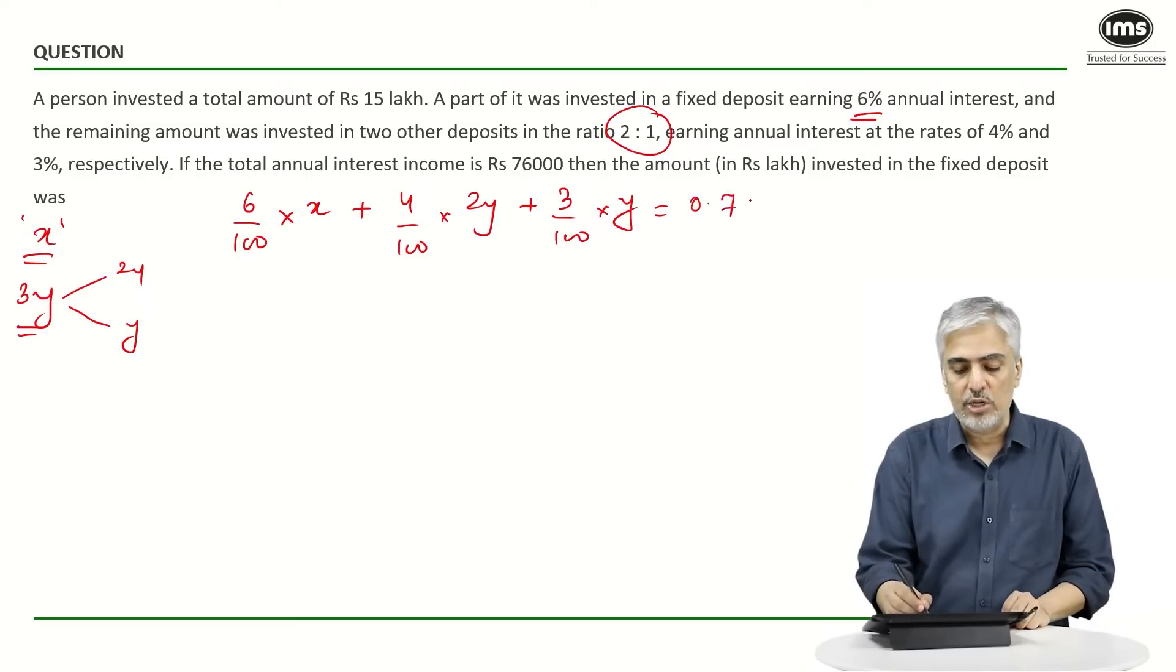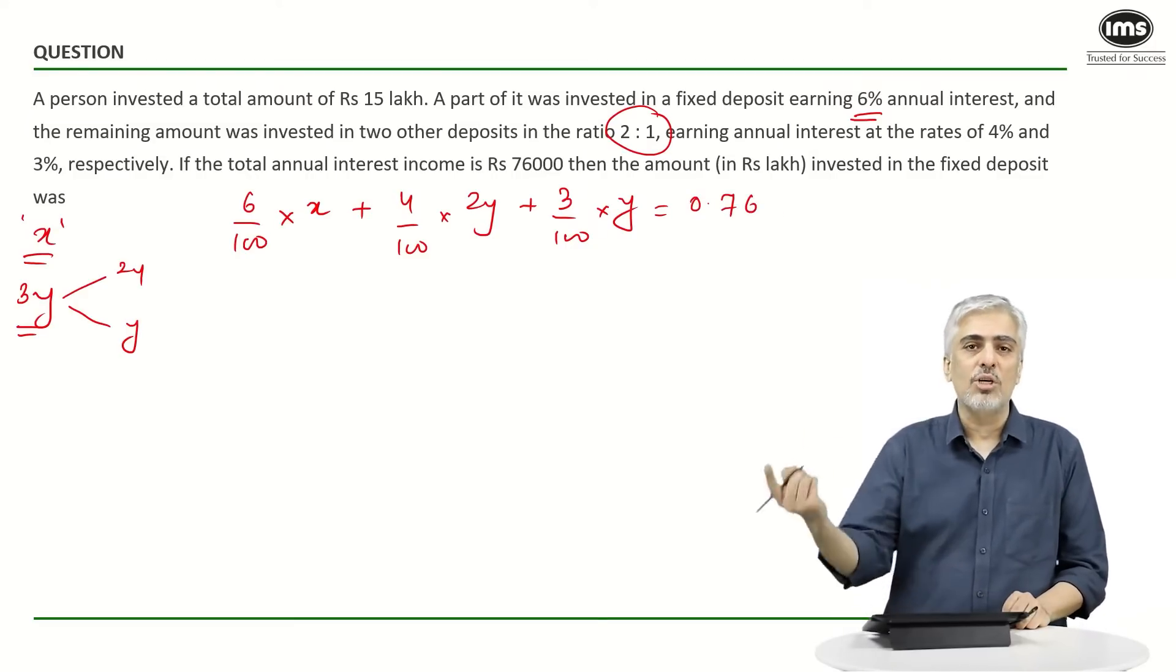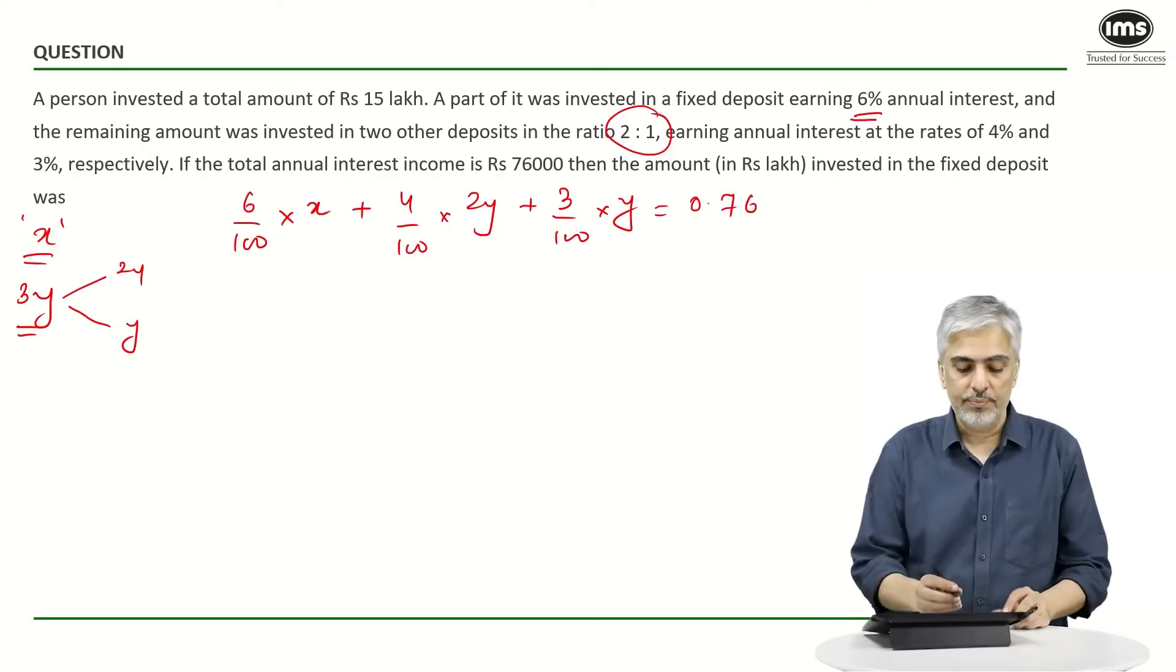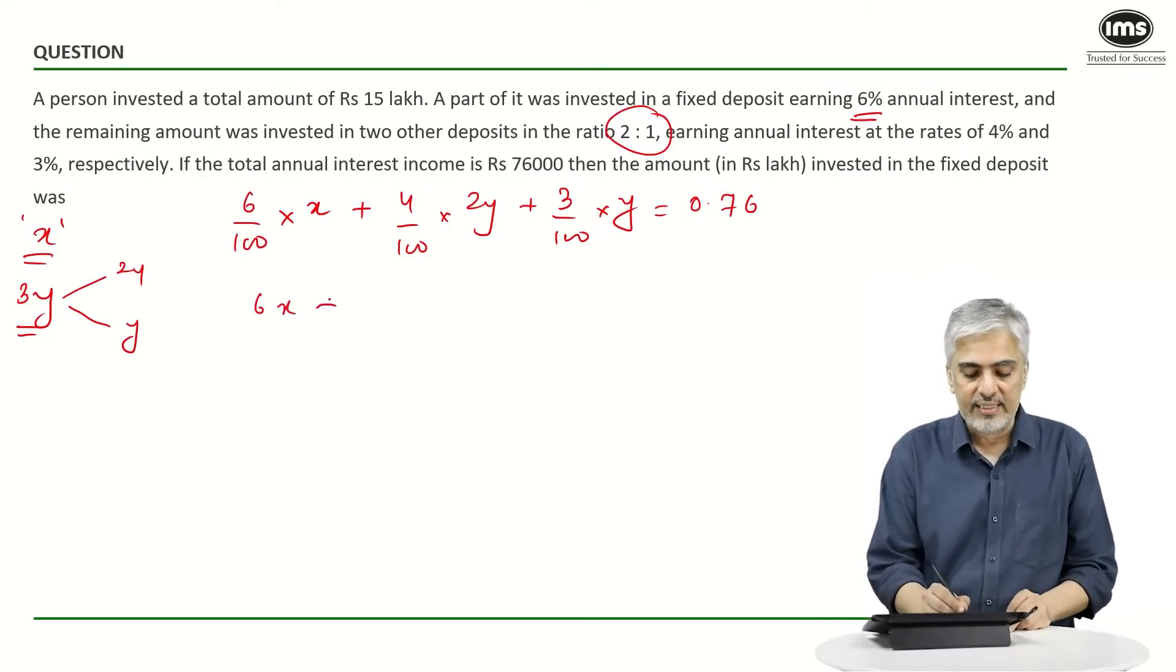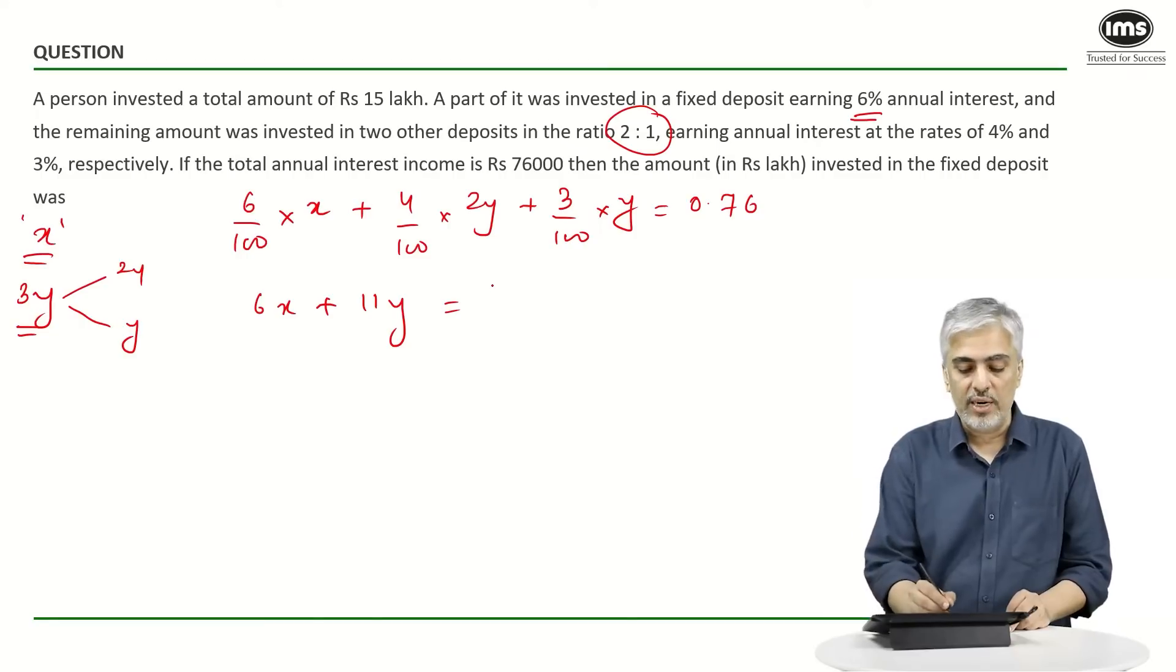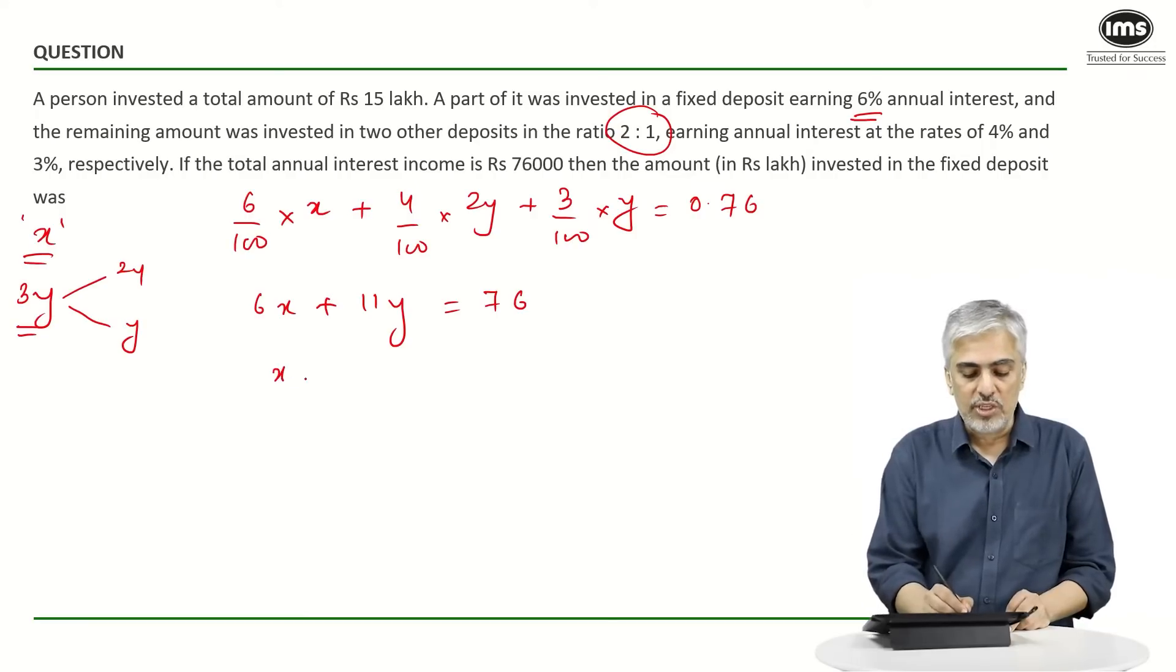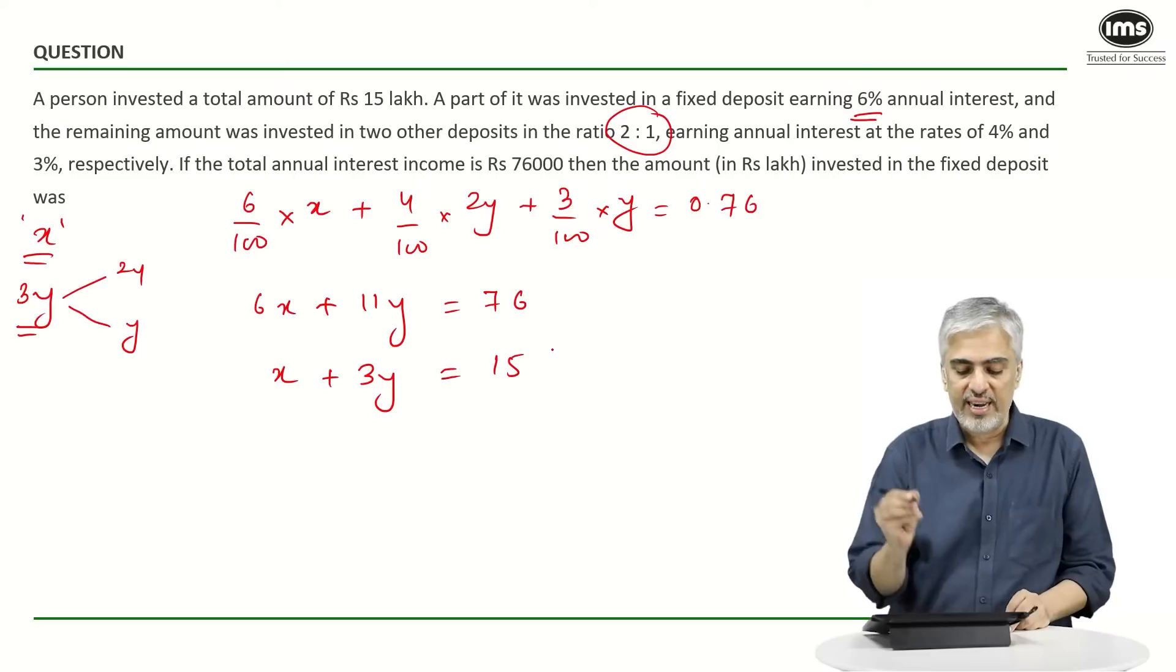If you want, you can write that as 0.76 lakhs because 15 lakhs has the first equation as 15 lakhs. I think it will be easier. So we'll have 6x + 8y + 3y, which is 11y, is equal to 0.76 × 100, which becomes 76 lakhs. And our first equation had to be x + 3y is equal to 15 lakhs. So I've got two equations.